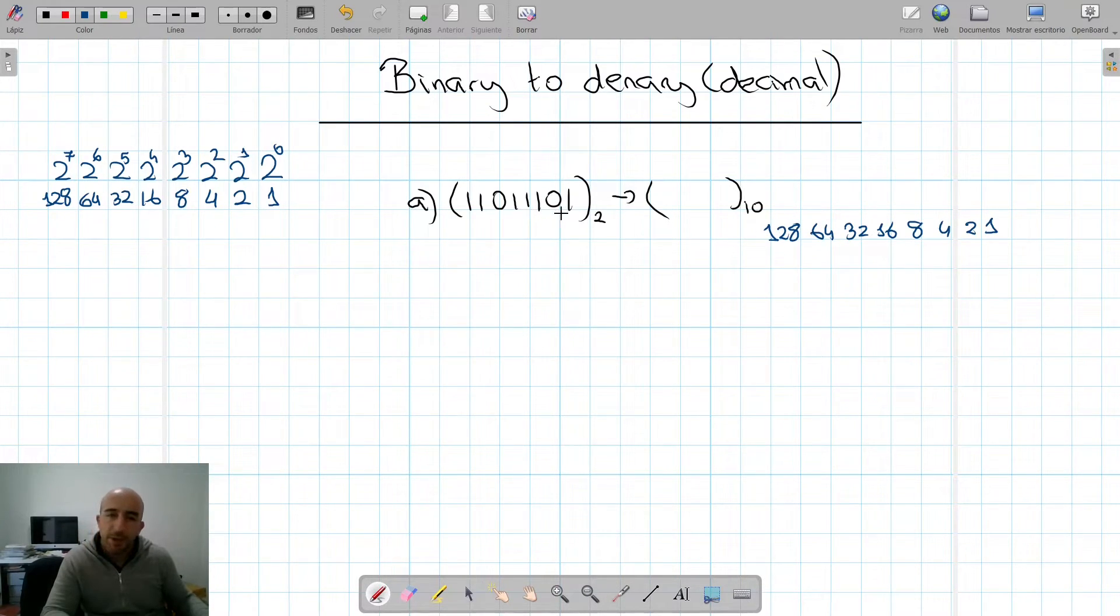And then we're going to write the number that we're given under those positions from right to left again. So we have 1, 0, 1, 1, 1, 0, 1, 1. So the denary value is calculated by multiplying each digit by the value of that position.